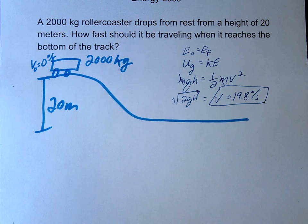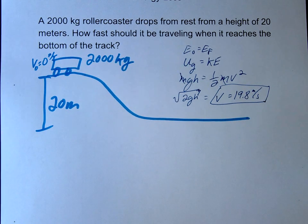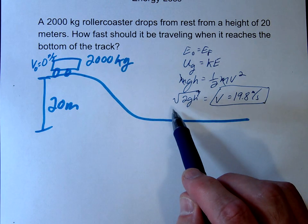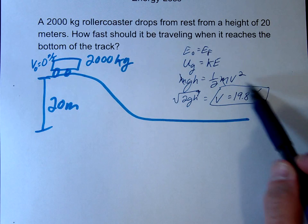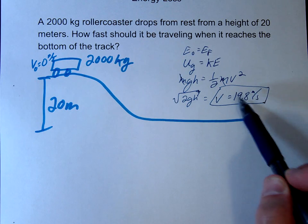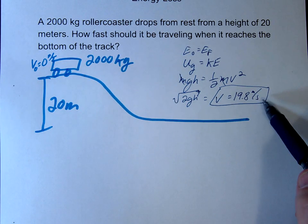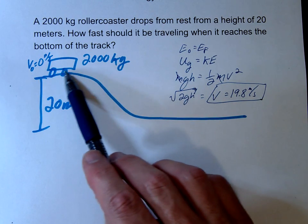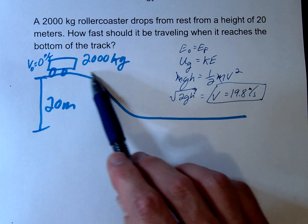So here's kind of the new question for today. Let's say if you were to actually do this, go to an amusement park and find the velocity at the bottom using a speed gun, you would not get this number. You would get something less than this number. And the reason is, as it's falling, there's going to be some friction. There's going to be some air resistance.